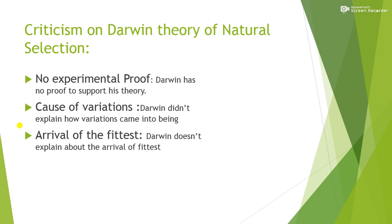Darwin discussed variations extensively in his theory but he did not explain why variations arise, where they come from, or how they are produced. He did not explain the cause of variations — how these variations appear in human beings, how some variations become successful in an individual and some become less successful.